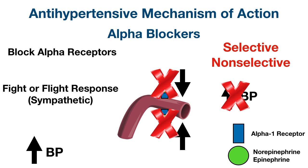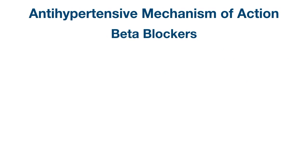There's also an EZMed autonomic nervous system video linked in the description for more information on the sympathetic nervous system. Now that we understand alpha blockers, let's talk about how beta blockers control high blood pressure. As the name suggests, they block beta receptors — they're beta receptor antagonists.